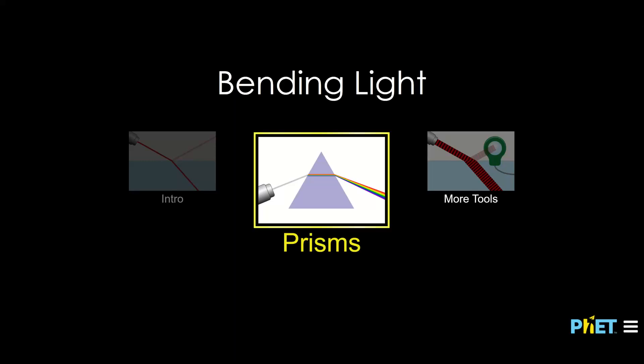I'm going to use this FET animation to teach you about dispersion, which is the separation of polychromatic light into its component wavelengths. That's a fancy way of saying separating white light into a rainbow.